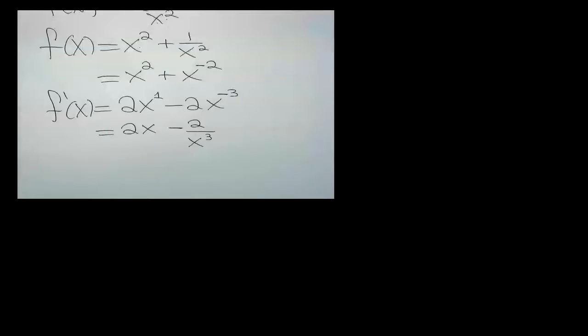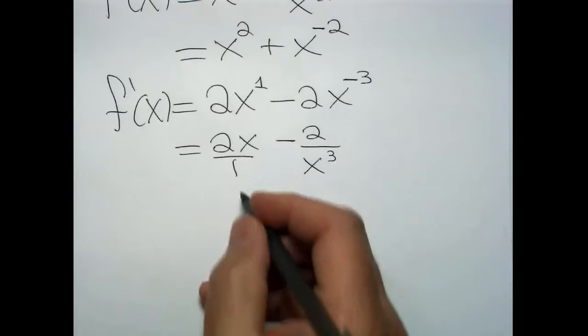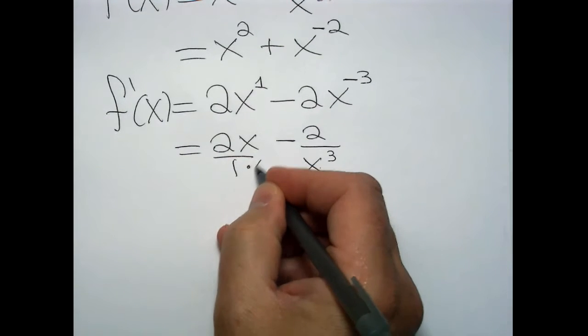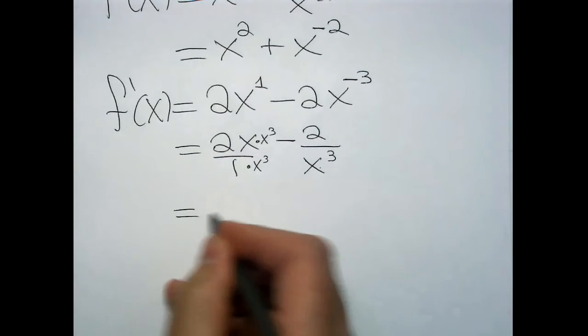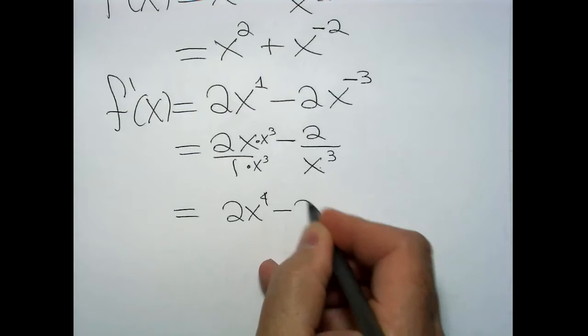I strongly recommend combining f prime into one fraction. If you want the fraction equal to zero, set the numerator equal to zero. If you want it undefined, set the denominator to zero. To combine 2x − 2x⁻³ into one fraction, the LCD is x³, giving f prime = (2x⁴ − 2) / x³. You can factor out the 2 if you like.